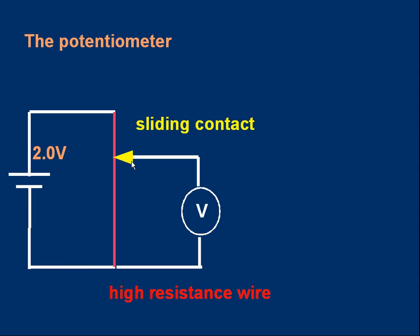Suppose we apply a two-volt cell. Then if the sliding contact is at the top, the voltmeter will read the full 2.0 volts. If the sliding contact is in the middle, the voltmeter will read 1.0 volts, and if the sliding contact is at the bottom, the voltmeter will read 0 volts.